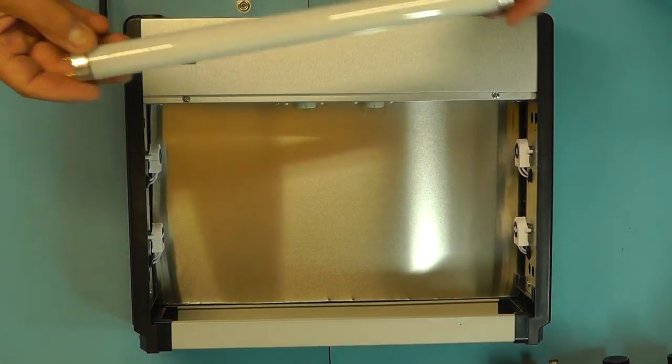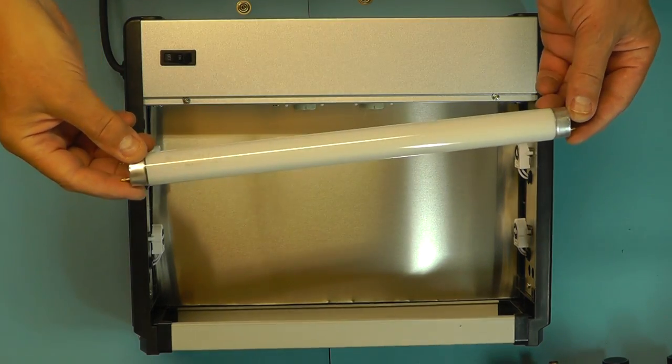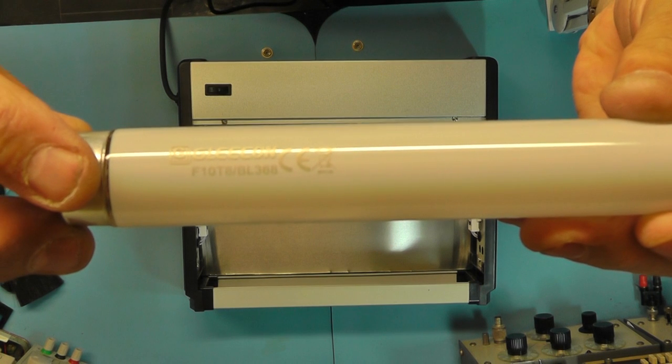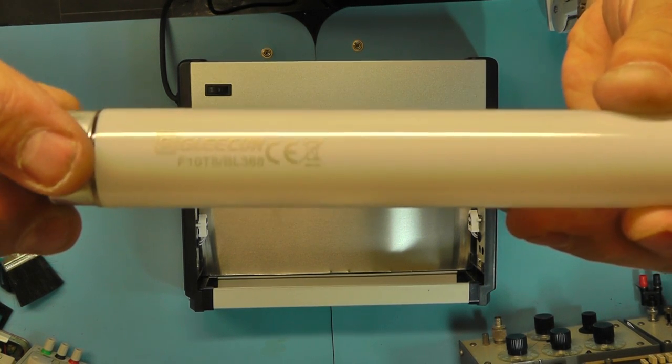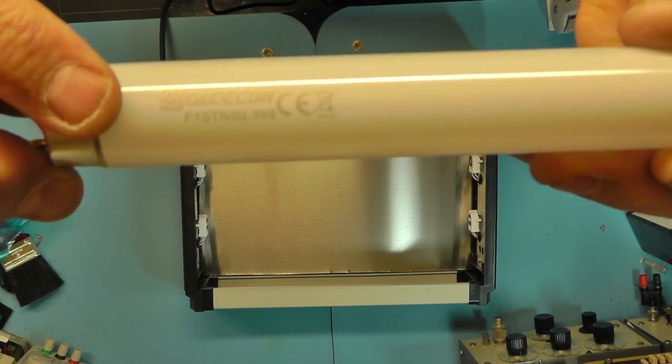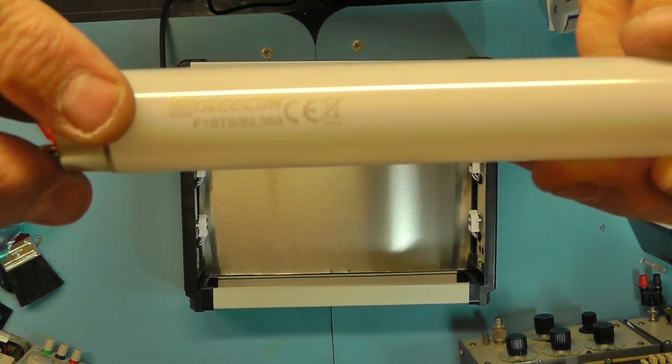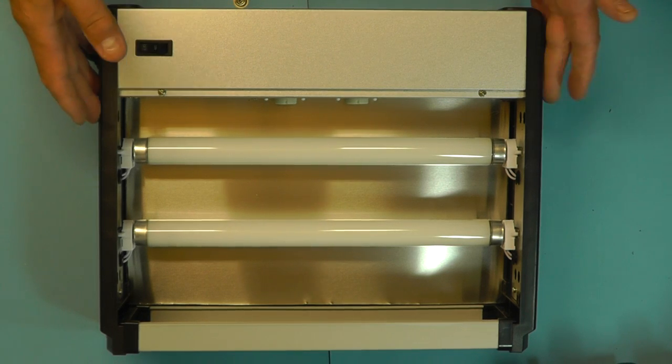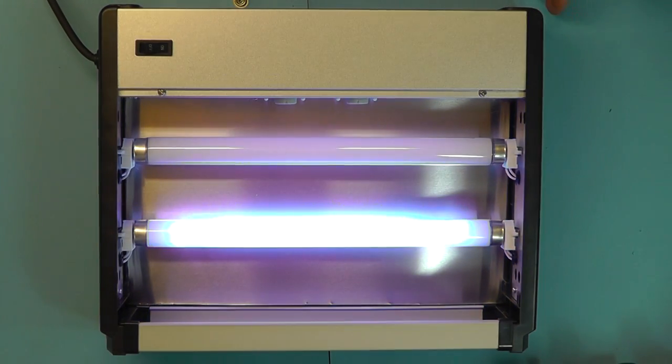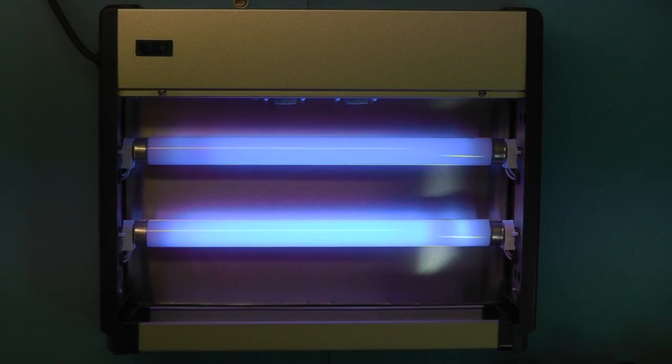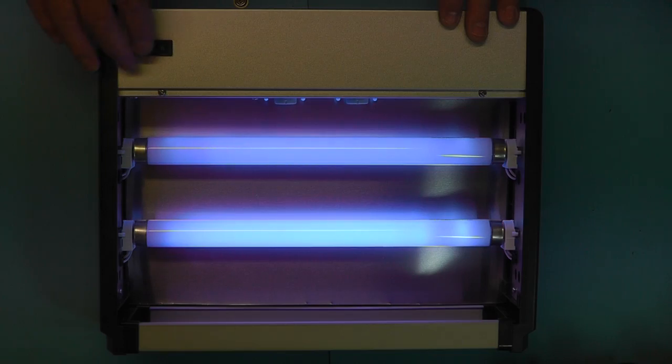The next thing I'm going to do now is refit the fluorescent tube. You see here it actually tells you the wavelength of the tube, and on these ones you can clearly see it's 368. Right, there we have the unit all back together now. There you go, seems to be working fine.